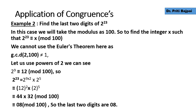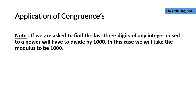Since 2^9 ≡ 12, the expression becomes 12^2 × 2^5 mod 100. Now 12^2 = 144, and 144 mod 100 gives residue 44. Also 2^5 = 32. So we compute 44 × 32 mod 100, which gives us 08. Therefore the last two digits of 2^23 are 08. Similarly, if we are asked to find the last three digits of any integer raised to a power, we divide by 1000 and take the modulus as 1000.